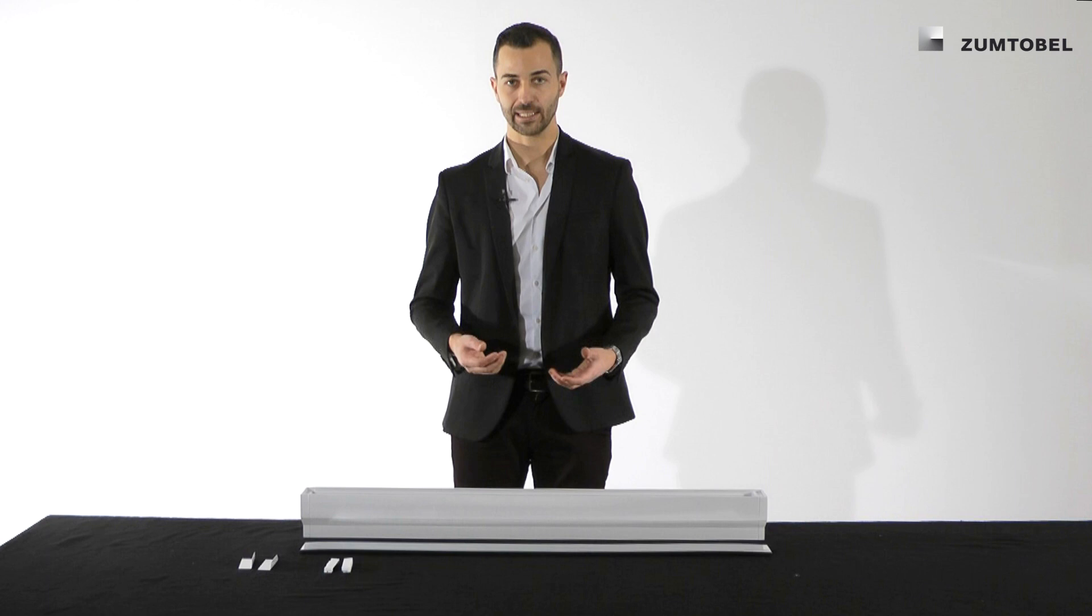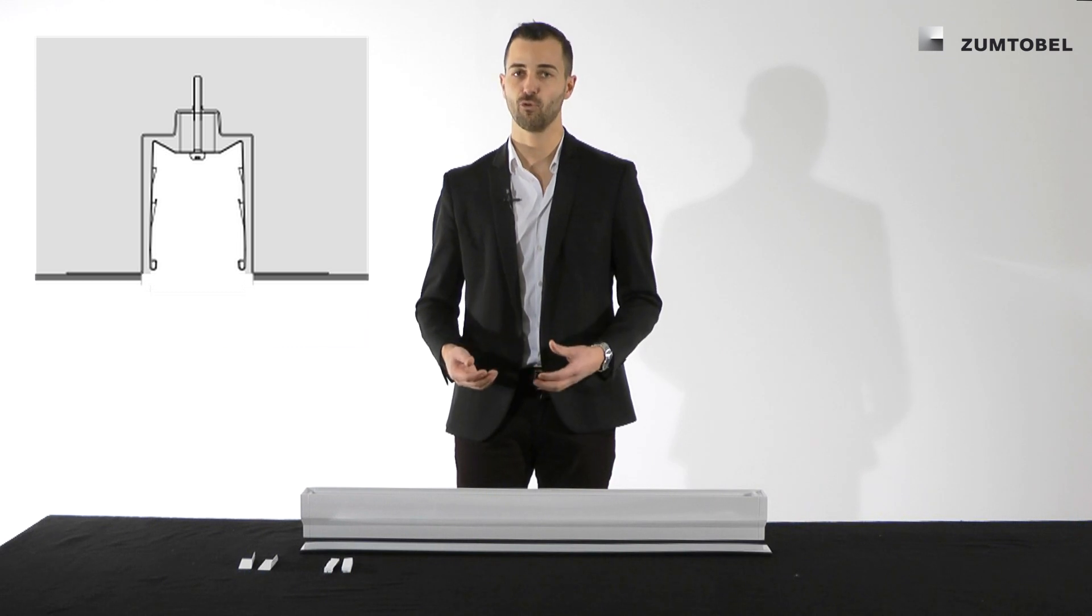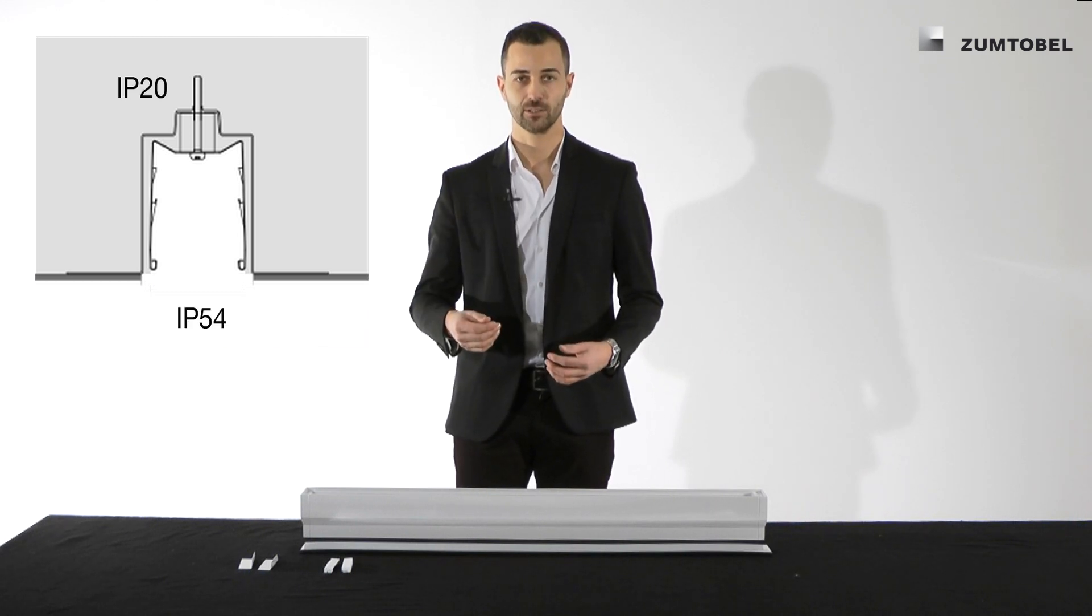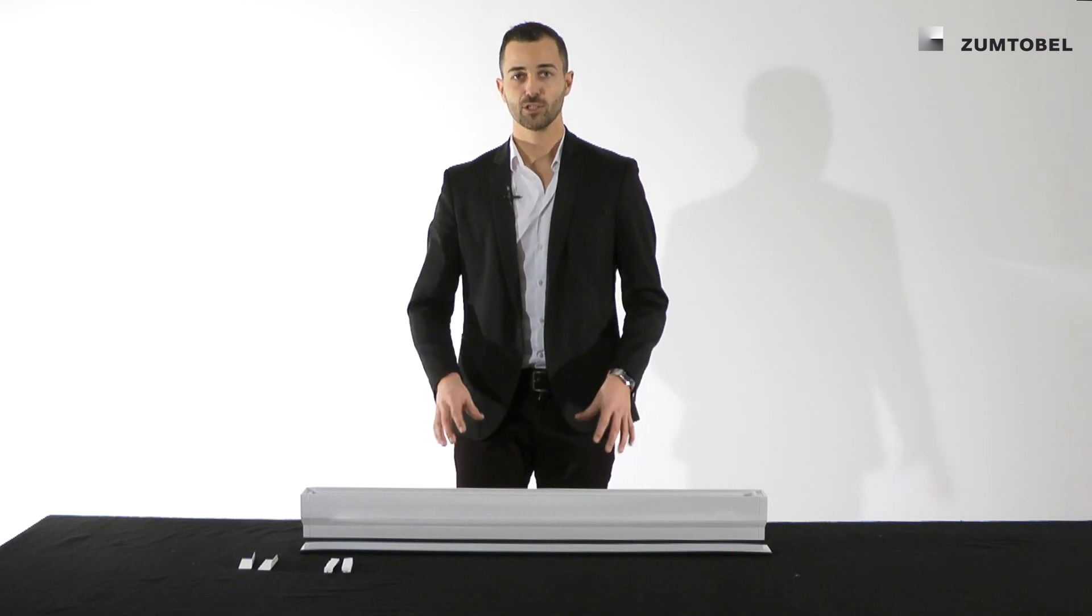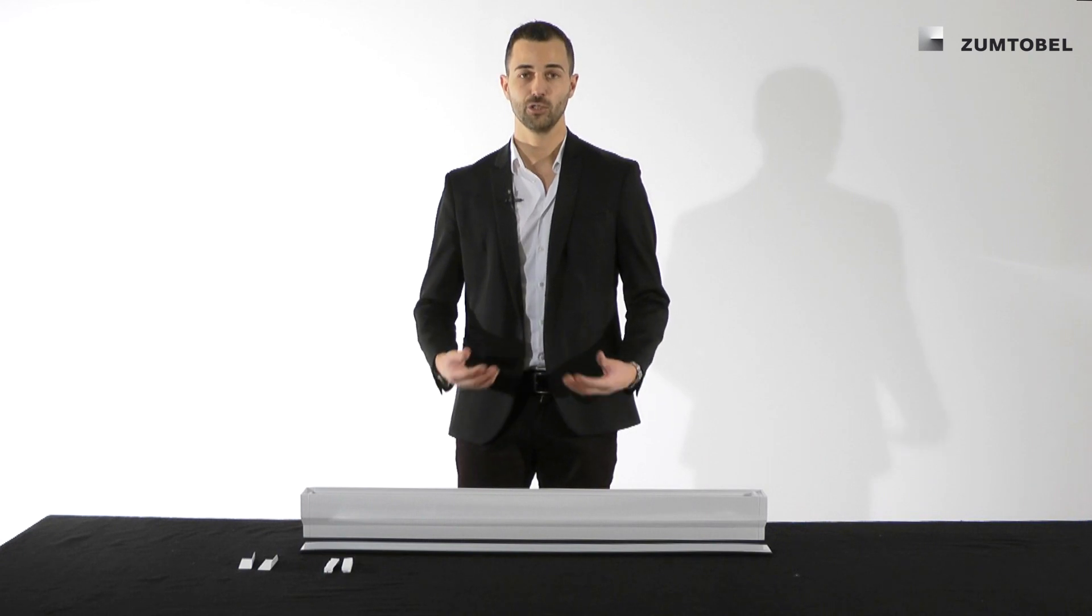Dust and water protection is also very important for light lines. We are very proud that already in the standard plasterboard version, we have an IP54 protection from below and IP20 from the back. To make this possible also for the surface mounted suspended version, we had to develop a new luminaire.